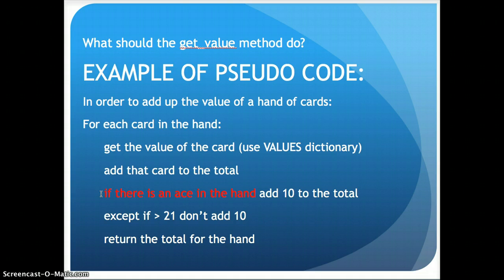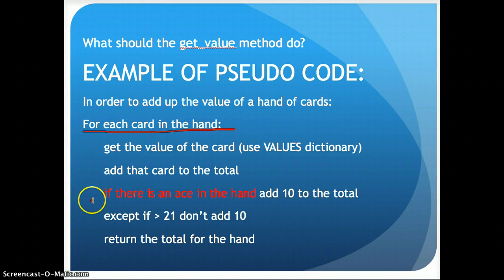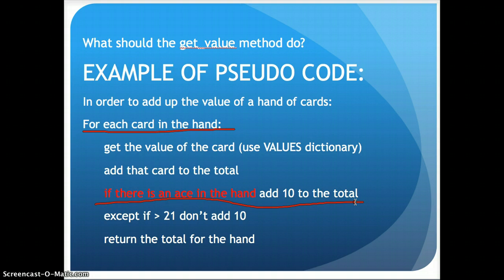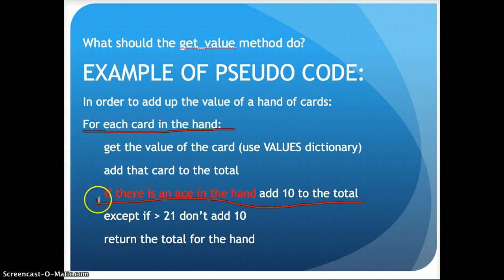There are a number of ways to resolve this, but here's one approach. If there's an ace in the hand, do I want to add 10 for each card as I go along in the loop? If I'm on the first card and I add 10, I don't know what the next card is going to be — it could make the total go over 21. So I don't think I can do the add-10 part for each card as I go. I can check if there's an ace as I go along, but I don't want to add the 10 until I know the total of the entire hand.